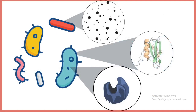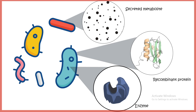Now let's understand what type of products can be generated using bioprocessing. The product could be a secreted metabolite excreted outside the cell, or it could be an enzyme relevant for biomedical research or as a therapeutic drug. It could also be a recombinant protein used for biomedical research.